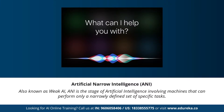Artificial narrow intelligence, also known as weak AI, is the stage involving machines that can perform only a narrowly defined set of specific tasks. At this stage, machines don't possess any thinking ability — they just perform a set of predefined functions. Examples of weak AI include Siri, Alexa, AlphaGo, Sophia, and self-driving cars. Almost all AI-based systems built to date fall under the category of weak AI or artificial narrow intelligence.